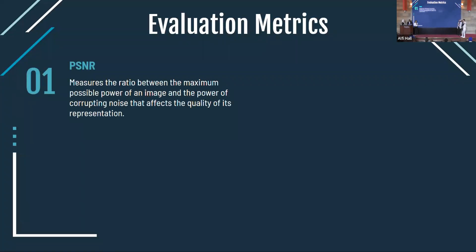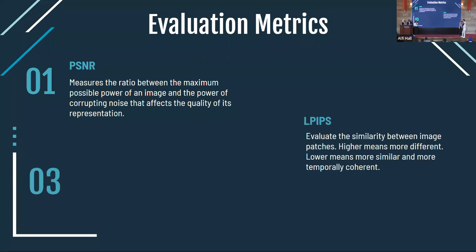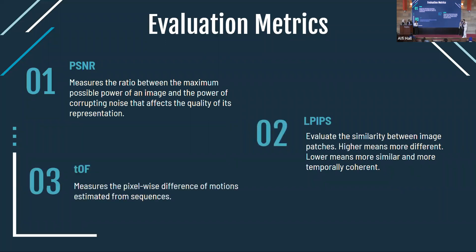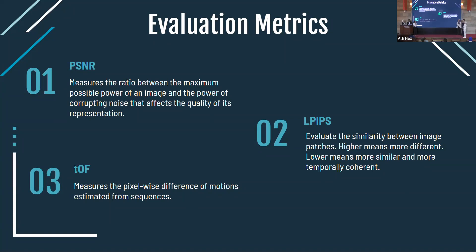Regarding the evaluation criteria, the usual criterion for evaluating super resolution quality is the peak signal-to-noise ratio, commonly known as PSNR. PSNR measures the ratio between the maximum possible power of an image and the power of corrupting noise that affects the quality of its representation. However, PSNR alone cannot reflect video quality from a human perception standpoint — even a high PSNR value doesn't mean the result is visually appealing. That's why we also used LPIPS, which stands for Learned Perceptual Image Patch Similarity.